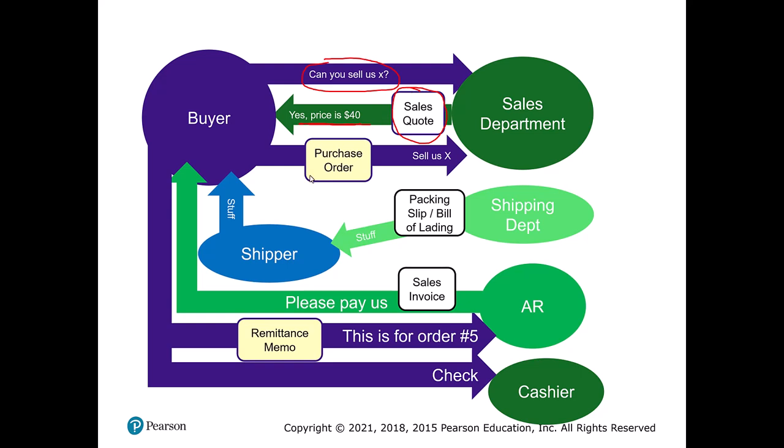Then from the buyer, they send us a document called the purchase order, which says yes, we agree to your terms and here's what we want — essentially a formal contract. We want to make sure these things tie together precisely. It's very possible that the sales quote offered 100 units for $30, but the purchase order comes back saying 122 units. So this is part of the reconciliation and controls process.